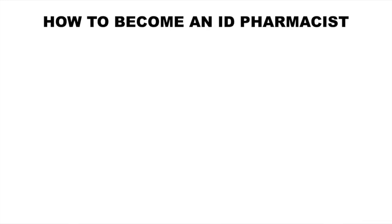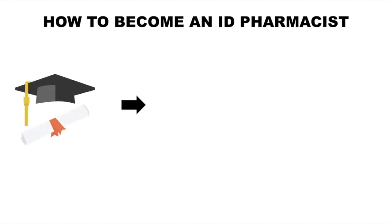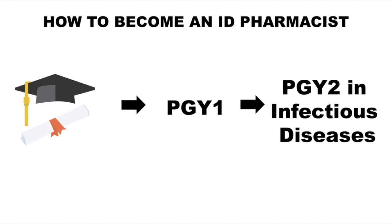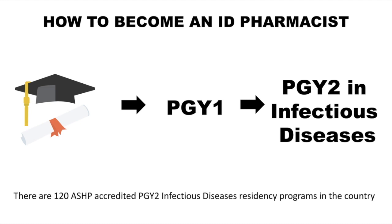How to become an infectious disease pharmacist is pretty straightforward: you get your PharmD, you do a PGY1 residency, you do a PGY2 residency in infectious diseases, and voilà. There are 120 ASHP-accredited PGY2 infectious diseases residency programs in the country, so there are quite a few positions available.